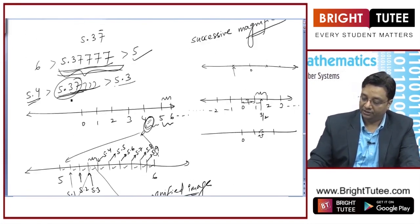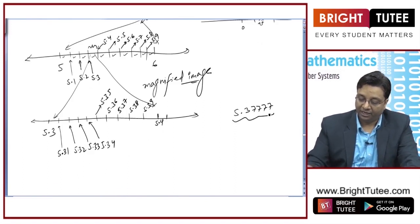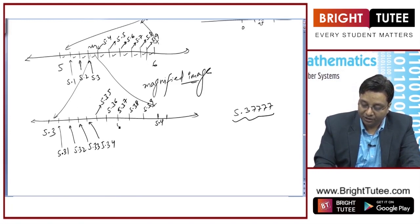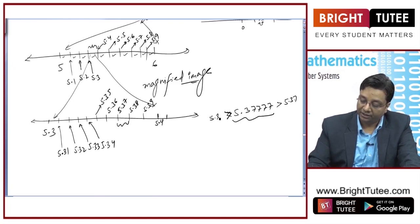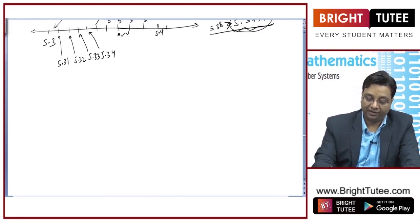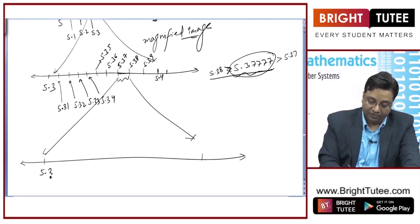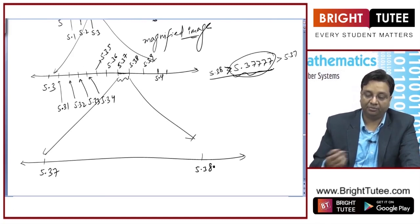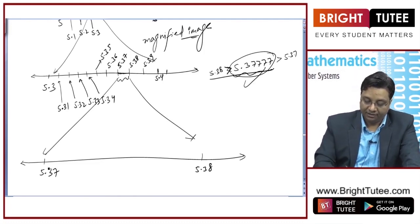Now consider the number 5.3777... Where will this lie among these intervals? It will lie between 5.37 and 5.38, because this number is greater than 5.37 and lesser than 5.38. I hope you have the sense of what I am doing — this is the procedure I need to follow to reach the exact point.